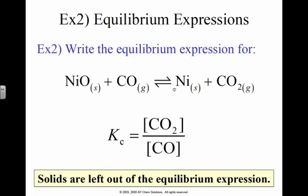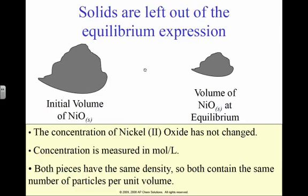For this one, nickel oxide plus carbon monoxide gas is producing nickel and carbon dioxide gas. Notice that I just have carbon dioxide here and carbon monoxide here. Solids are left out of the equilibrium expression. We do not use this solid; we do not use this solid. Why? Because of these brackets right here; those brackets mean molarity.